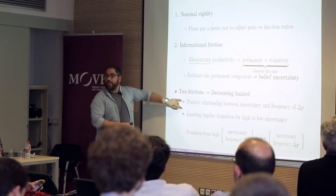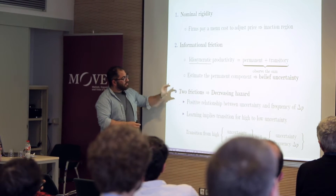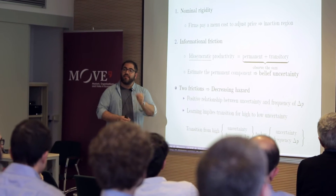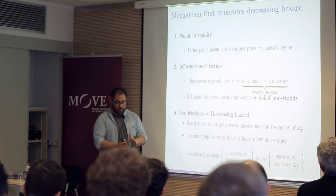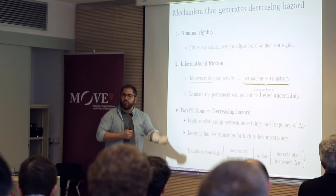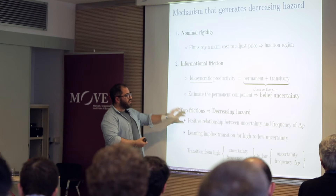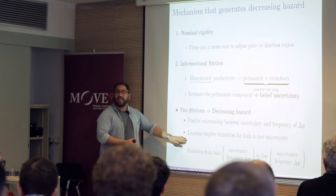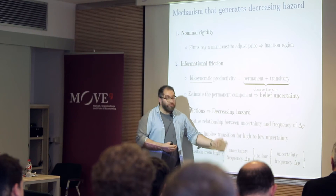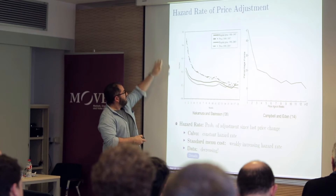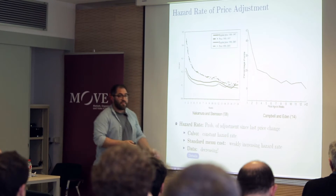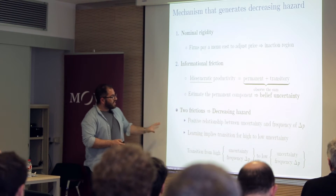There's a positive relationship between a firm's uncertainty and the frequency with which she changes prices. A firm that is very uncertain will have wider inaction regions, but also more volatility of the estimate, so option values and volatility effects compete. I show that more uncertainty means more frequency. How do I get the decreasing hazard rate? Think of a firm that just had a permanent shock — she's very uncertain, changing her prices a lot. As time goes by, the firm learns her true productivity level and stabilizes. That learning is what gives me the decreasing hazard.